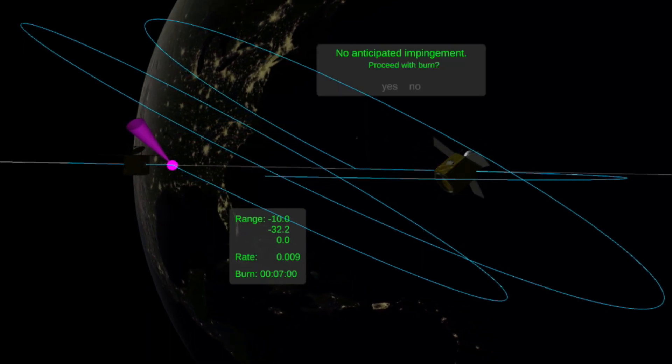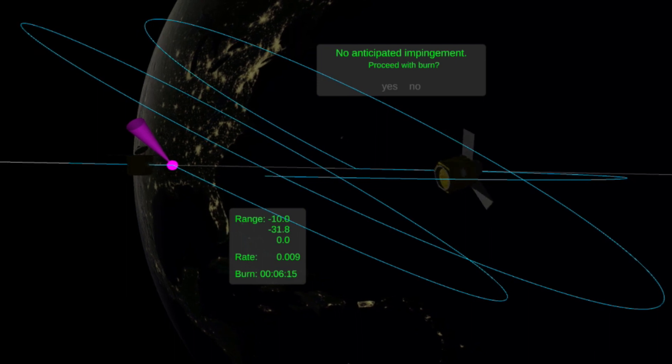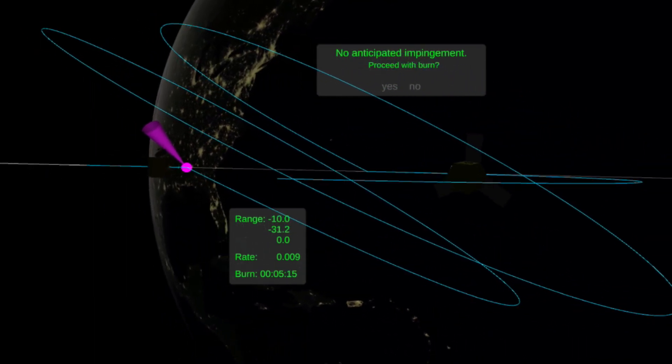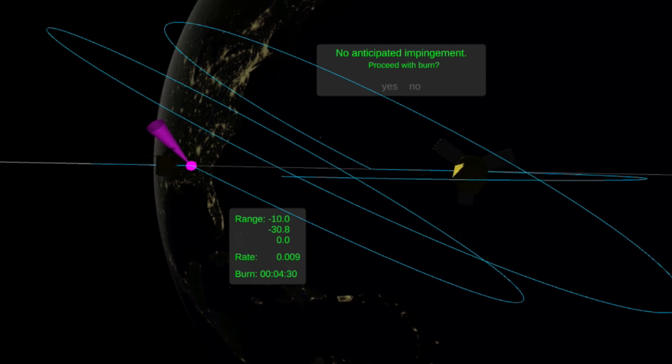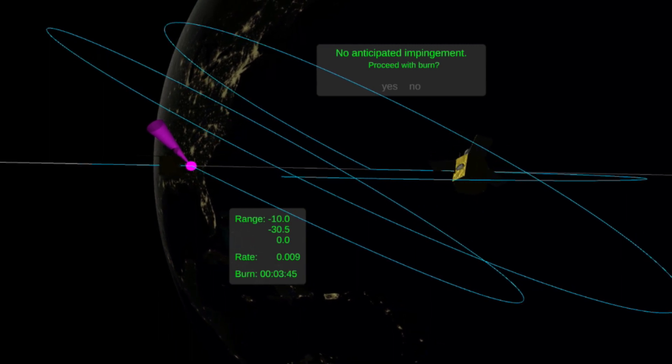The heads-up display is always in the same spot in the field of view, so even if I turn my head around to see other parts of the environment, I can always see this critical information in an easy to interpret manner.